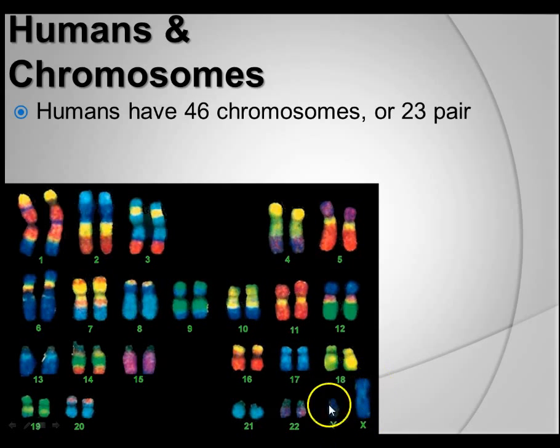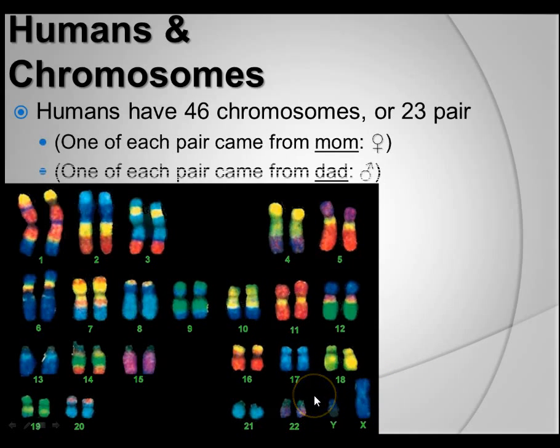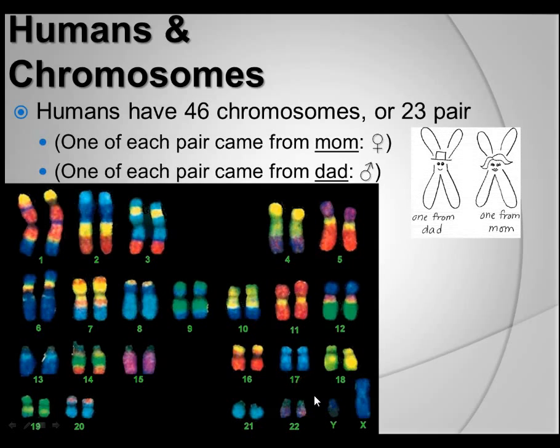This is a karyotype of a male, because it has a Y chromosome. Of those 46 chromosomes you have, one of each came from your mom, and one of each came from your dad.